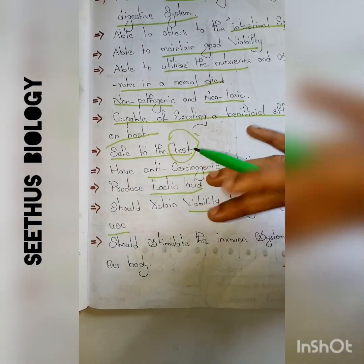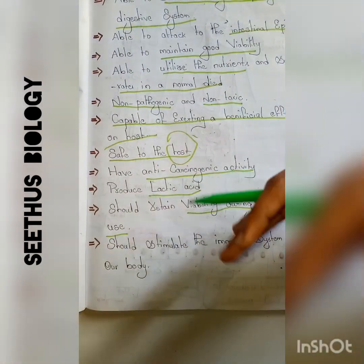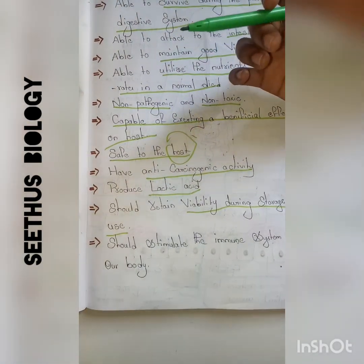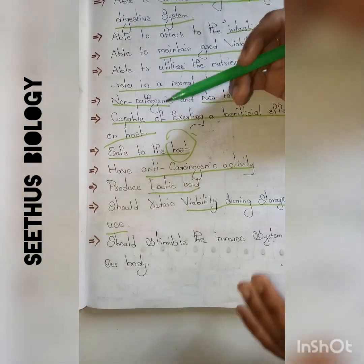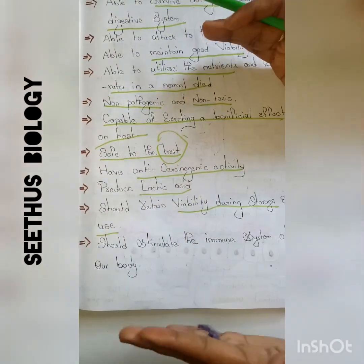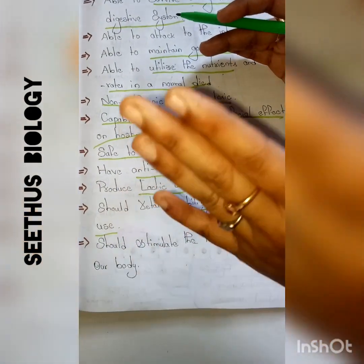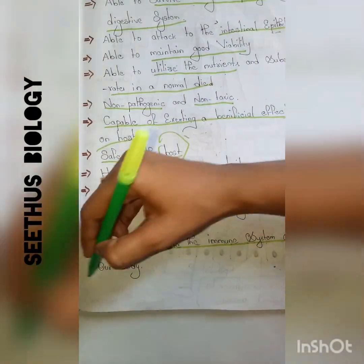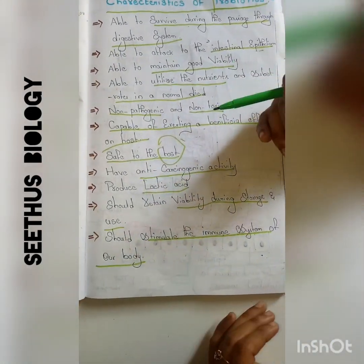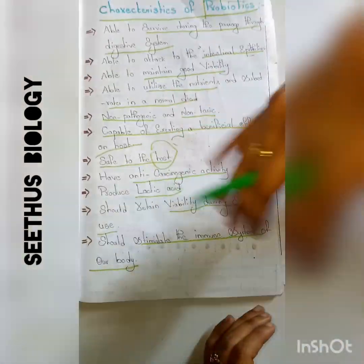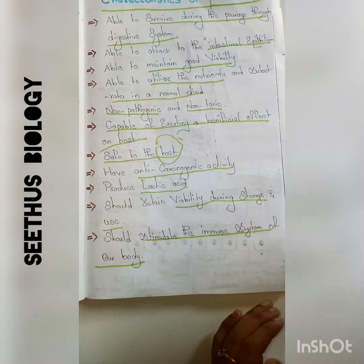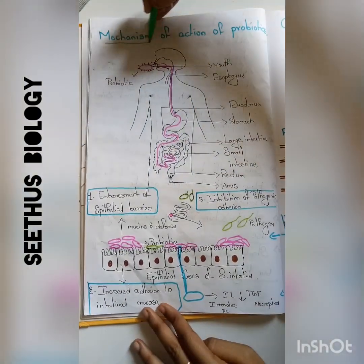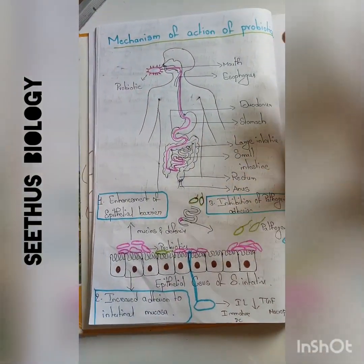Probiotics must have the capability to produce lactic acid in our body. They should retain viability during storage — when probiotics are prepared as pills or powder and stored, they must remain in a viable or alive state. They must also be capable of stimulating and increasing the immune system of our body when consumed.